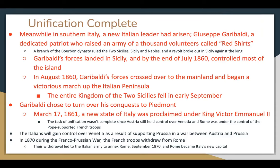Meanwhile in southern Italy, a new Italian leader had arisen: Giuseppe Garibaldi, a dedicated patriot who raised an army of a thousand volunteers called the Red Shirts. A branch of the Bourbon dynasty ruled the Two Sicilies — Sicily and Naples — and revolt broke out in Sicily against the king. Garibaldi's forces landed in Sicily and by the end of July 1860 controlled most of the island. In August his forces crossed over to the mainland and began a victorious march up the Italian peninsula. The entire Kingdom of the Two Sicilies fell in early September, and Garibaldi made the conscious decision to turn over his conquest to Piedmont.